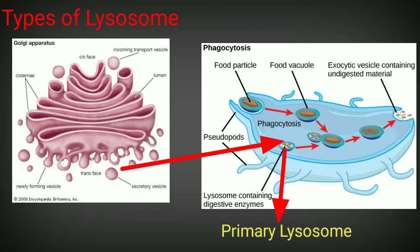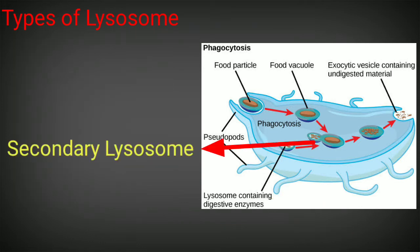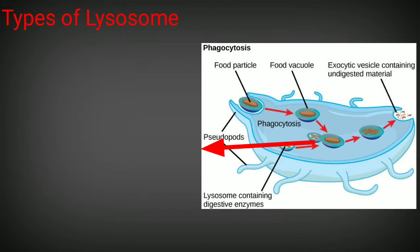The secondary lysosome is formed from the fusion of food-containing vacuoles with the lysosome. Cells have certain vacuoles that store food, and when the primary lysosome fuses with these food-containing vacuoles, that gives rise to the secondary lysosome.